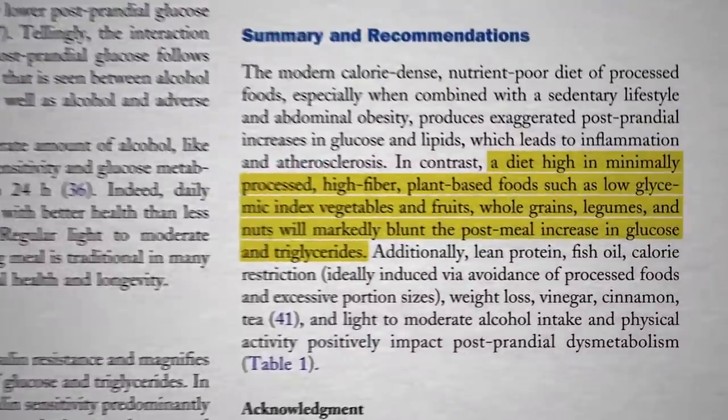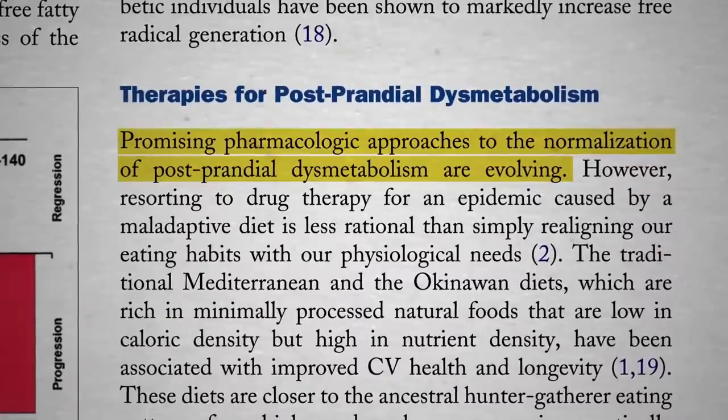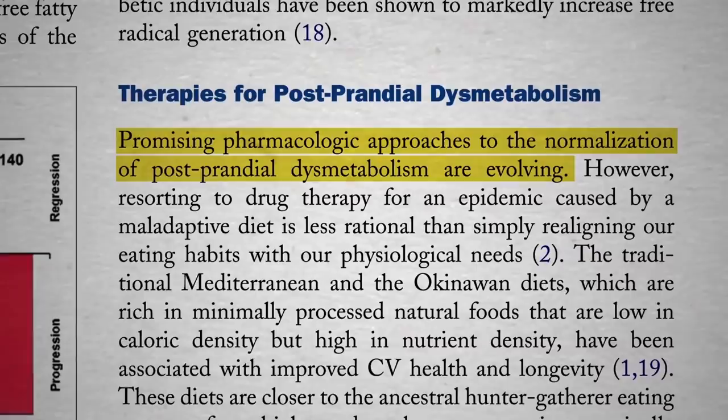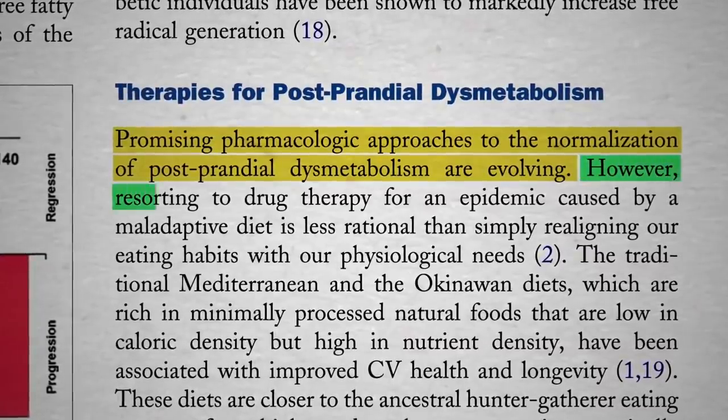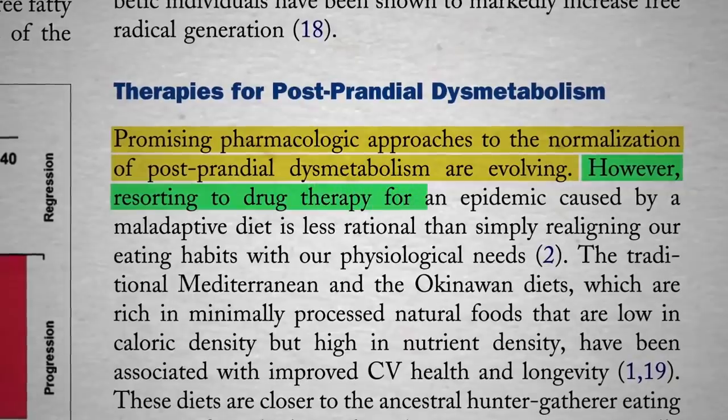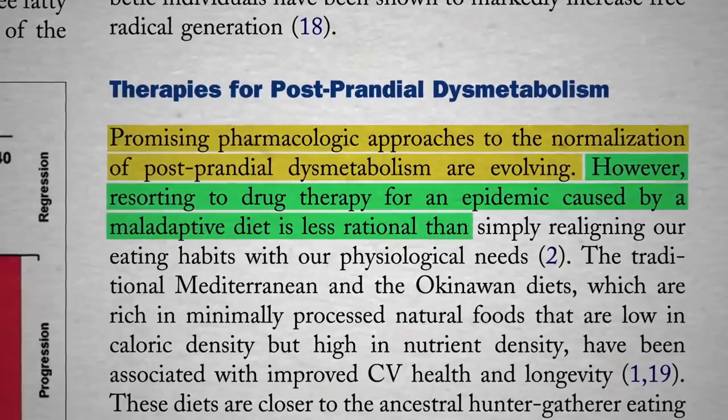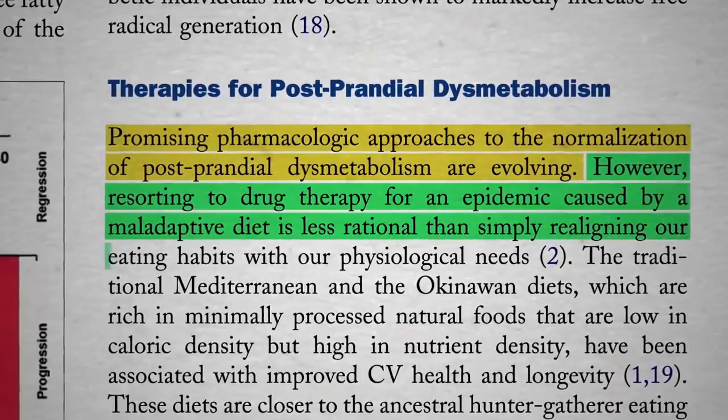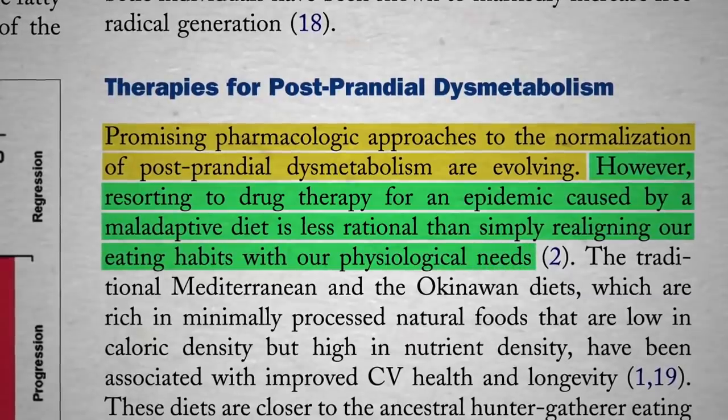The healthiest approach is a whole-food, plant-based diet, but there are promising pharmacologic approaches to the normalization of high blood sugars and fat by taking medications. However, resorting to drug therapy for an epidemic caused by a maladaptive diet is less rational than simply realigning our eating habits with our physiological needs.